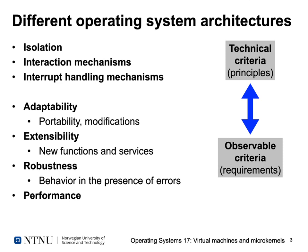For observable criteria — requirements we want to ask of our system — we have at least four: adaptability (how easy is it to port a system to a different hardware architecture or make modifications), extensibility (how easy is it to add new functions and services), robustness (what's the behavior of the system in the presence of errors), and finally performance as yet another observable criterion.